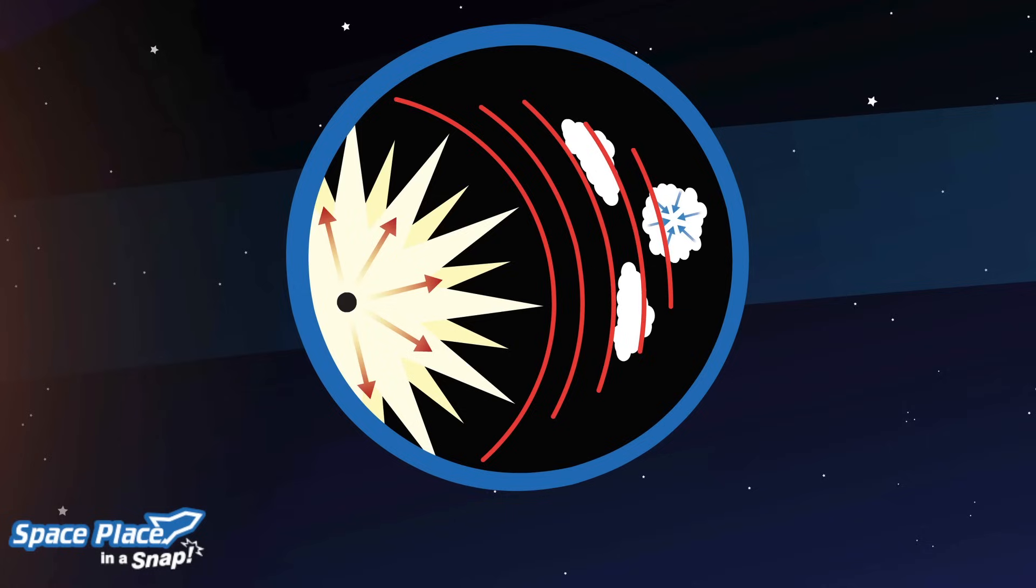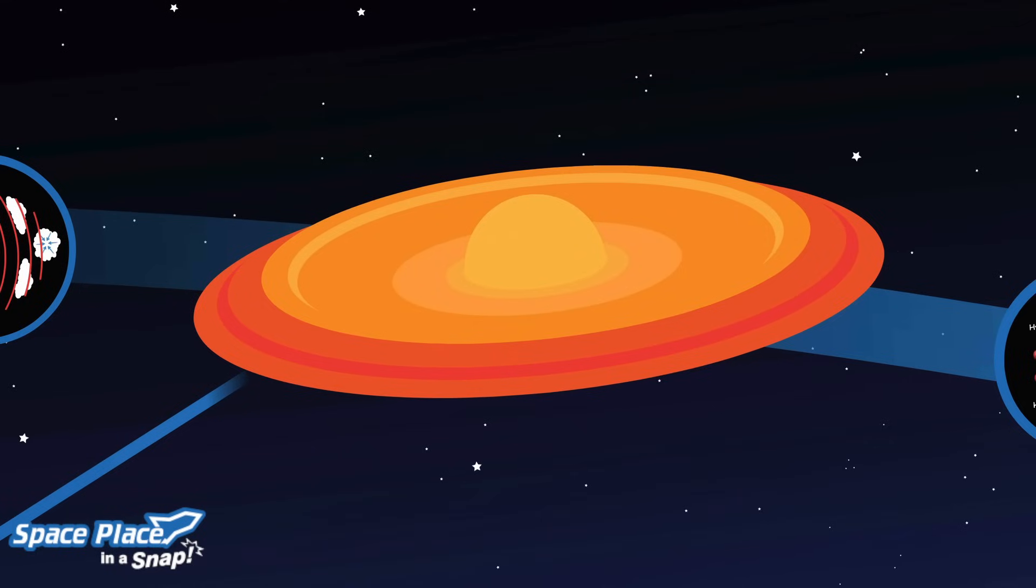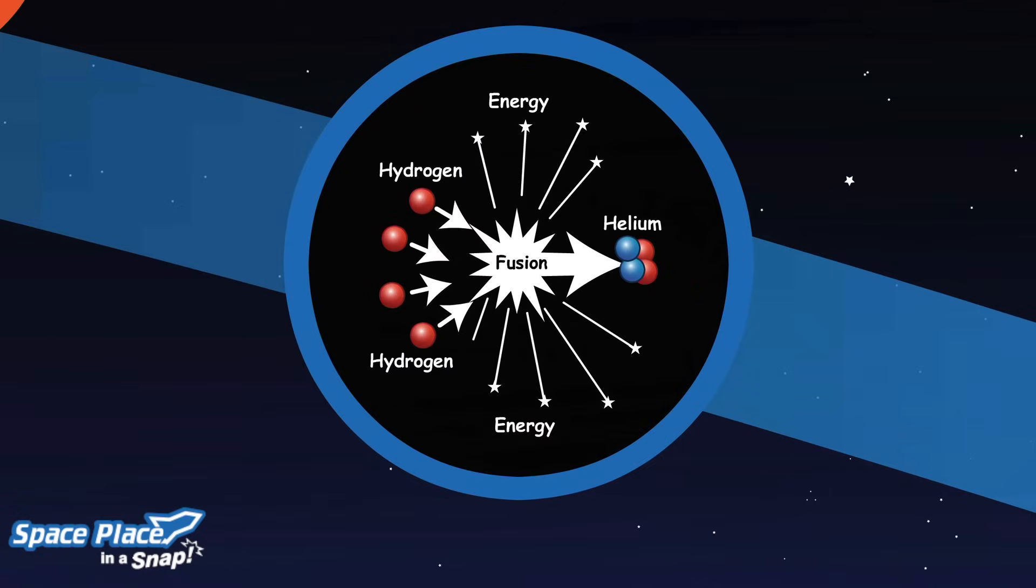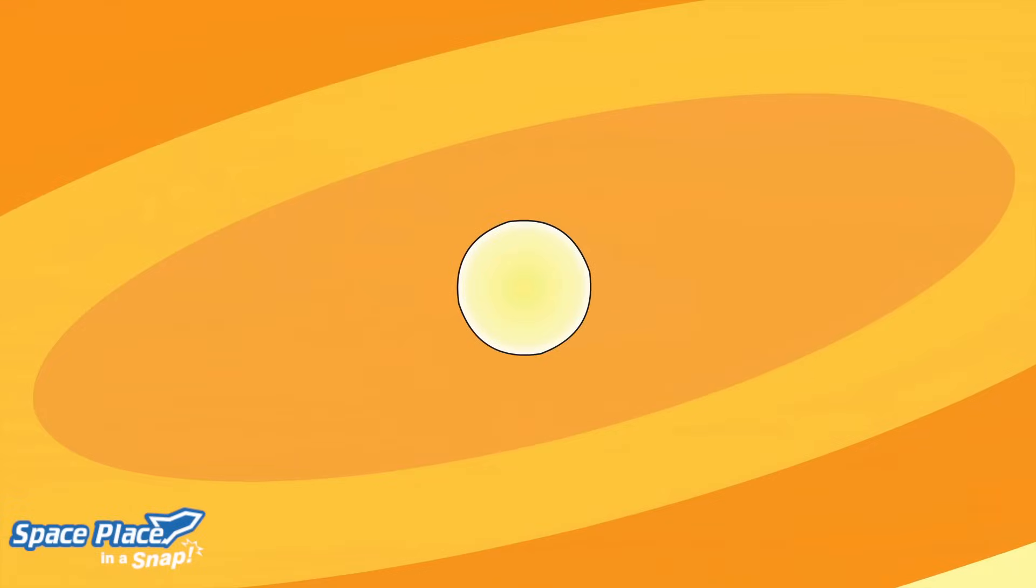When it collapsed, it fell in on itself, creating a disk of material surrounding it. Finally, the pressure caused by the material was so great that hydrogen atoms began to fuse into helium, releasing a tremendous amount of energy. Our sun was born.